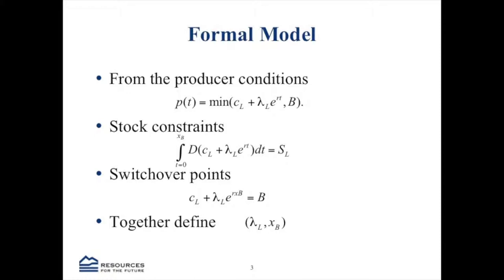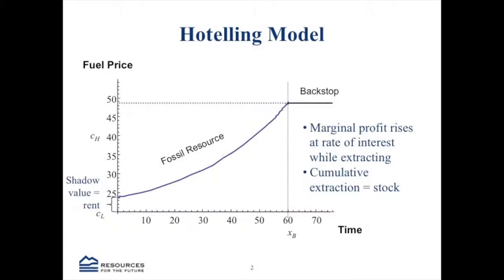Taking the first-order condition, subject to the constraint that over time you can't extract more than your physical stock, you get that your net profit — the price minus the extraction cost — equals the shadow value of the resource. The discounted marginal profit equals this constant shadow value. Or conversely, your marginal profit is going to be increasing over time at the rate of interest, because that's the opportunity cost of your capital.